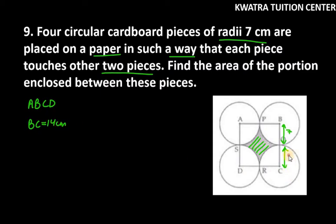7 plus 7 is 14. And if BC is 14, it means that all sides are 14 cm. So let A be 14 cm, let side B be 14 cm.